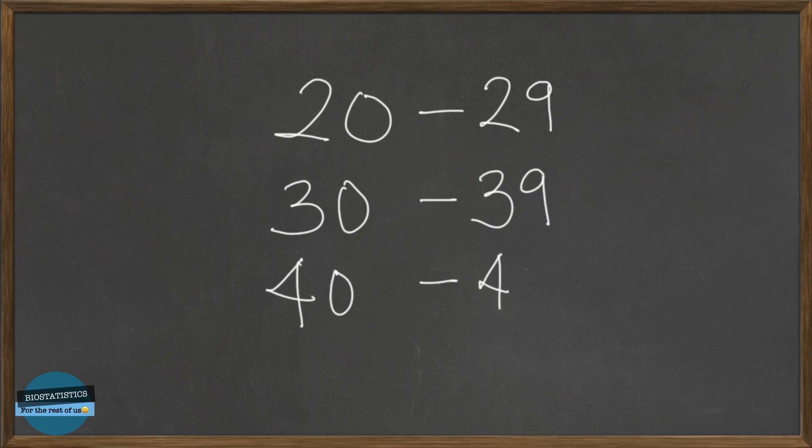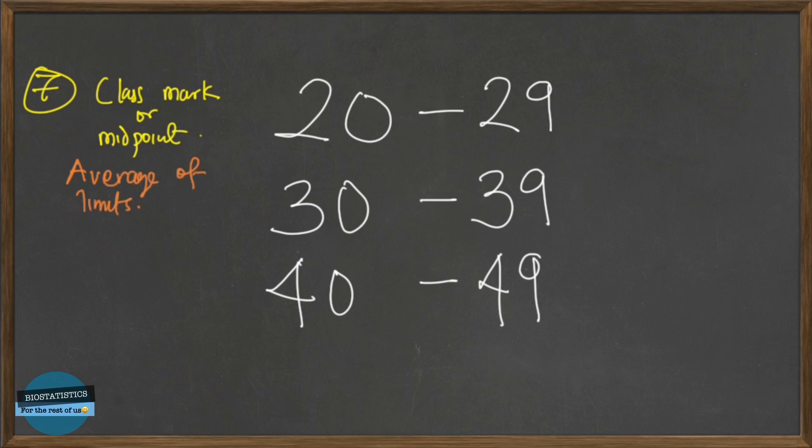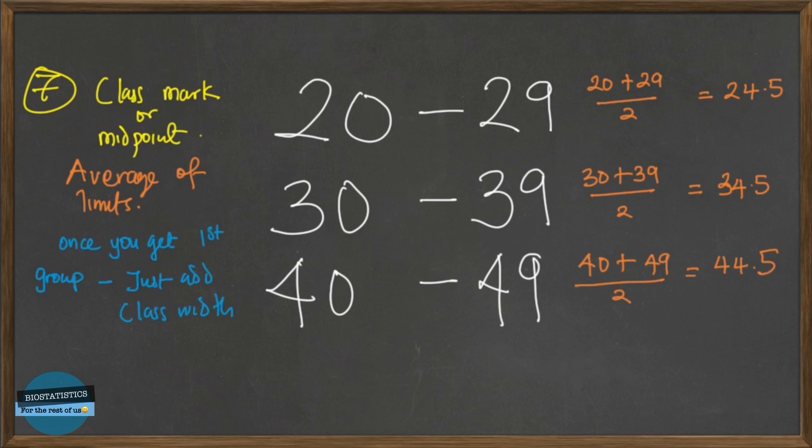So the final terminology we're going to talk about is called the class mark or the midpoint. And as the name implies, it's the midpoint between the two limits. It's the midpoint of a group or the average of the limits. So all we do is to add the two limits together and divide by 2. So for here it's 20 plus 29 divided by 2 and we have 24.5. That's the class mark. Same thing here and same thing here. Once you get the first one, you can just add the class width and you get the other one.